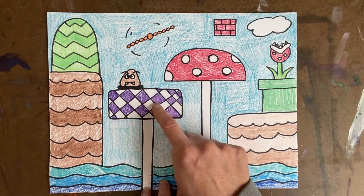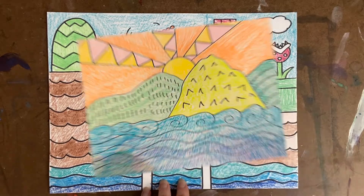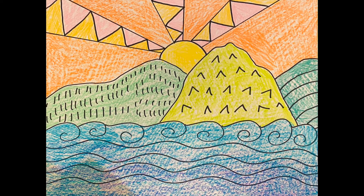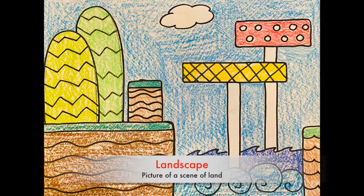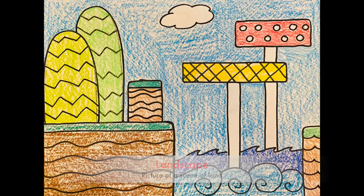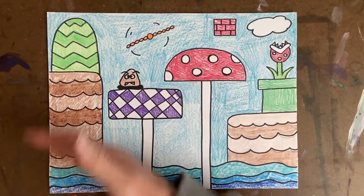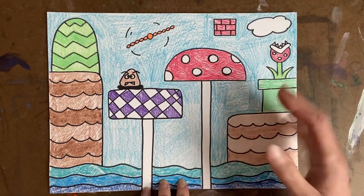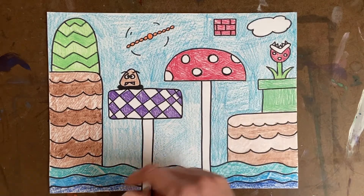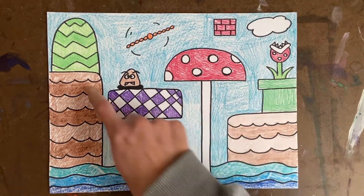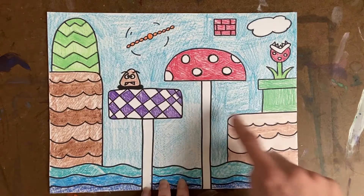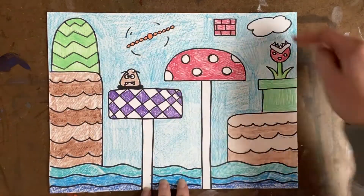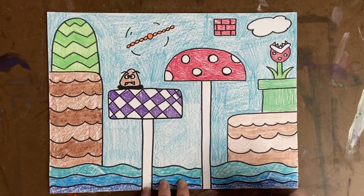They're basically rectangles, half circles, triangles, and then what we see in a lot of these landscapes — and by the way, landscape means a picture of the land — we see patterns. So as you can see in these land features that your video game character would jump between, we see different types of lines that repeat over and over again. When something repeats over and over again, we call it a pattern.